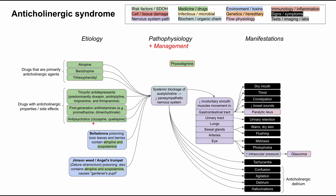A few quick words on management: in most cases you don't need an antidote, but if you do, physostigmine is your option. It is a reversible acetylcholinesterase inhibitor — acetylcholinesterase is the enzyme that breaks down acetylcholine, so inhibiting it means more acetylcholine is available to compete with the blockers. In most cases you can just wait for the effect to wear off. However, in TCA ingestion specifically, do not give physostigmine — there have been reported cases of it causing asystole in TCA patients. Do an EKG first before considering physostigmine.